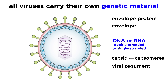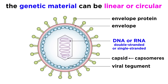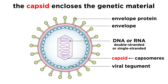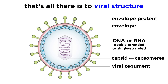The thing they all have in common is that they carry their own genetic material, which could be double-stranded or single-stranded, and either DNA or RNA. This will typically be found as either a single linear molecule or a circular molecule. The protein shell that encloses the genetic material is called the capsid, which comes in different shapes for different viruses, and the capsid is made of smaller subunits called capsomeres. That's really all there is to the structure of a virus.